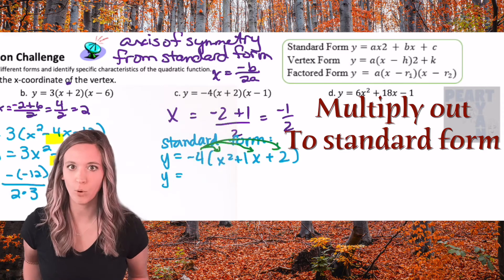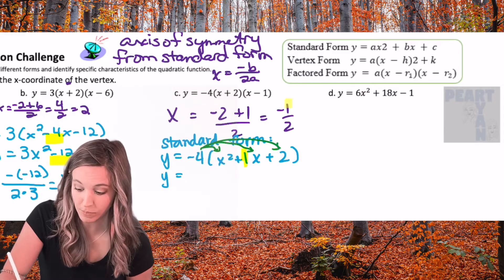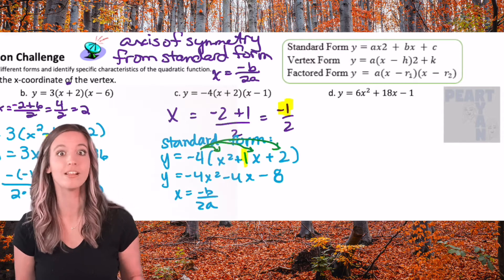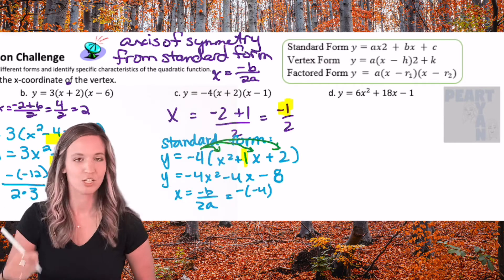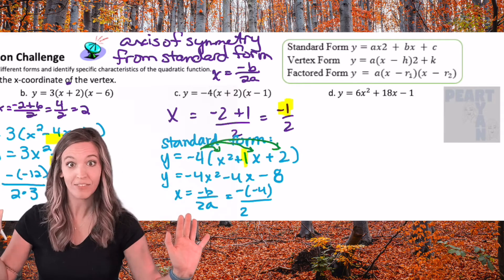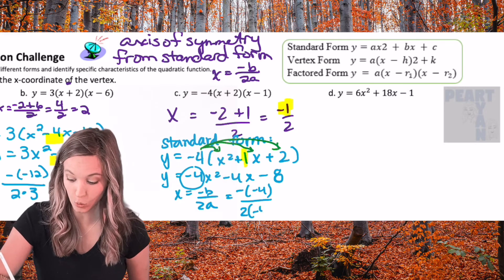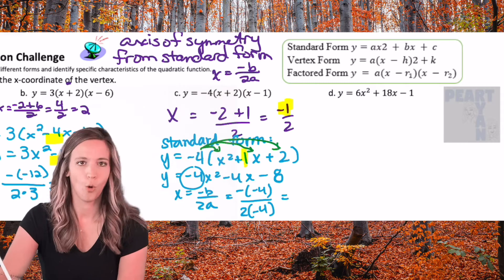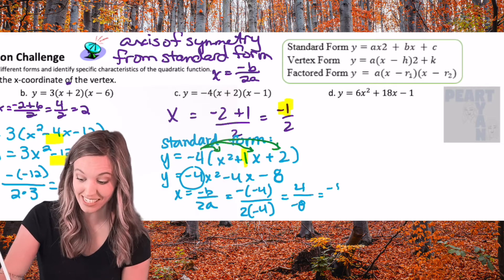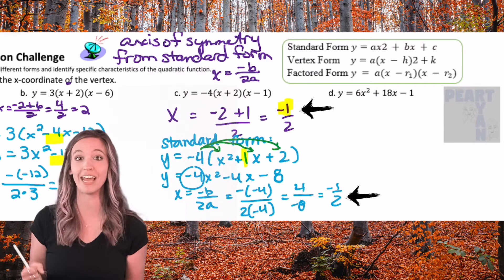Before I distribute that negative 4, let's look at b. b is 1, so the opposite of b would be negative 1. To find the axis of symmetry from standard form: x equals the opposite of b divided by 2a. So the opposite of negative 4 divided by 2 — but I have to divide out that a value as well, so 2 times negative 4. I get 4 divided by negative 8, which is negative one half. So x equals the opposite of b divided by 2a gives the axis of symmetry.